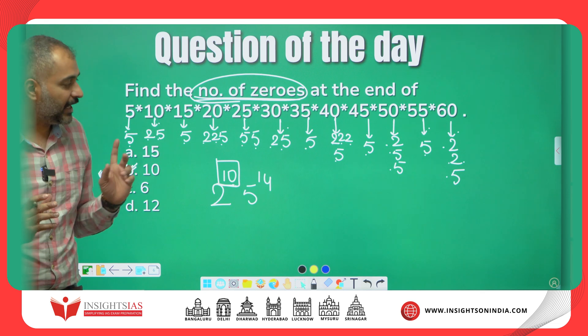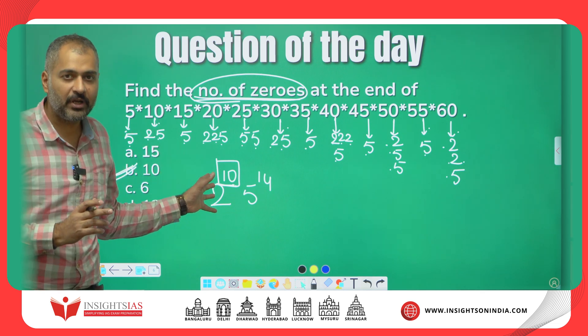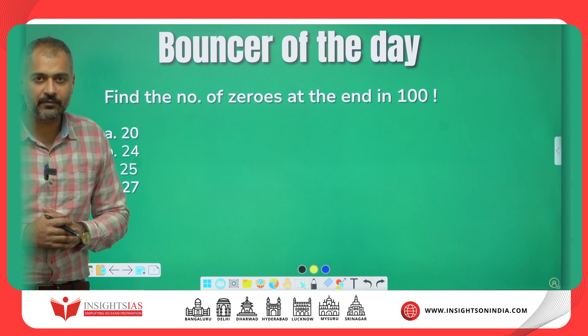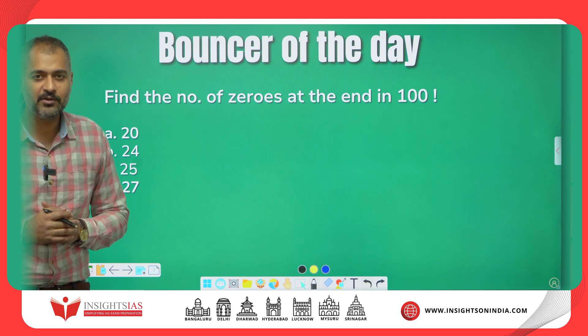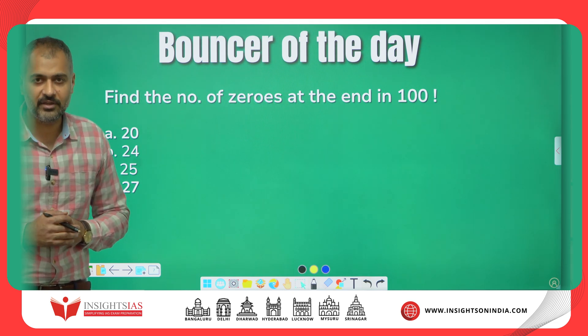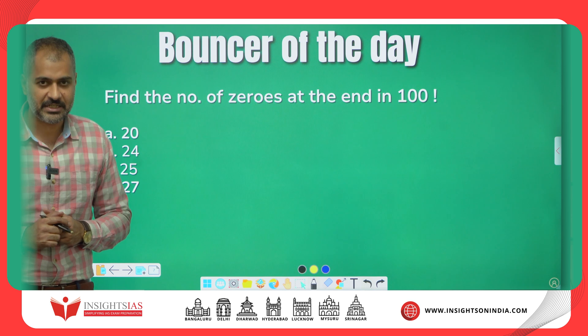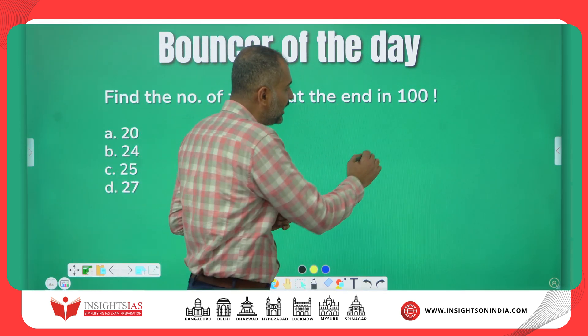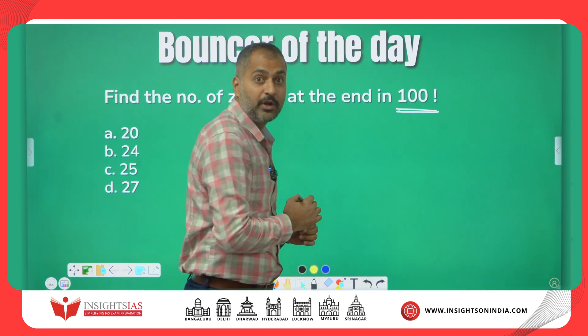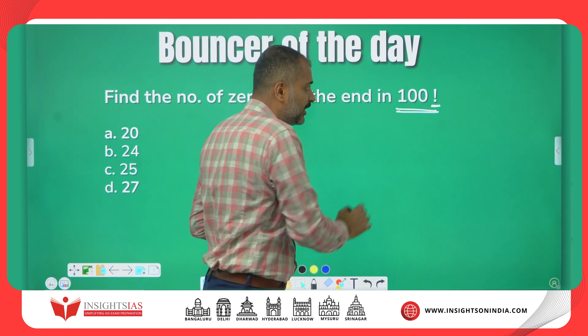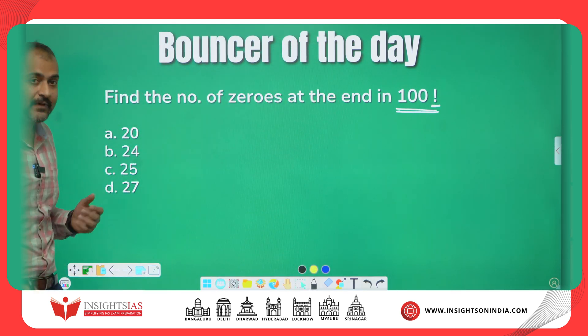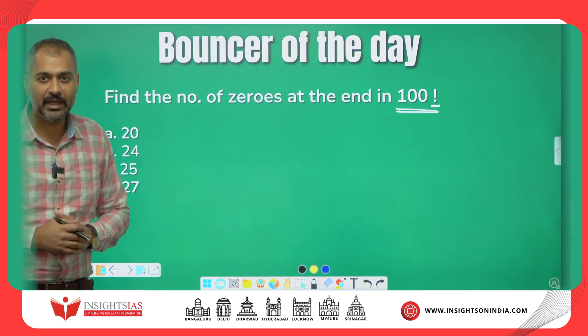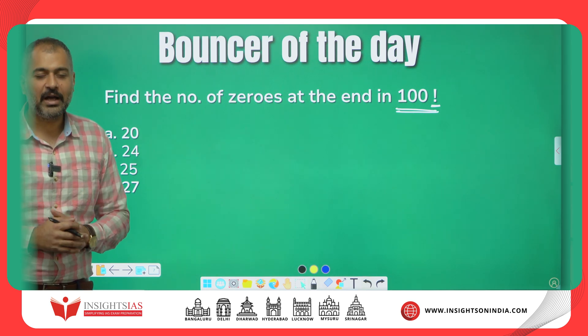I hope you have understood and enjoyed this concept. This kind of question is asked every year in the exam. This is the bouncer of the day and this is your homework question: Find the number of zeros at the end in 100 factorial. Your options are 20, 24, 25, 27. The answer and explanation, I'll give you in the next video. Thank you, I'll see you in the next video.